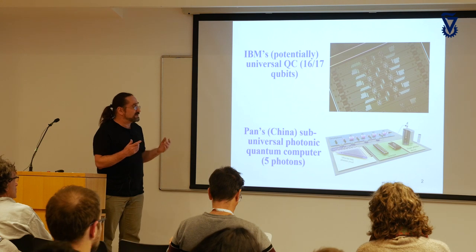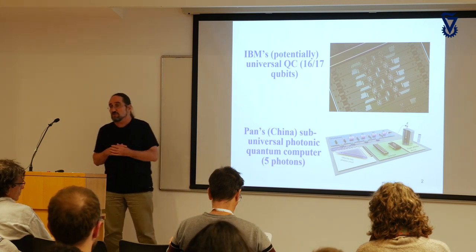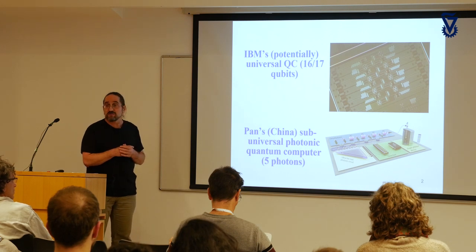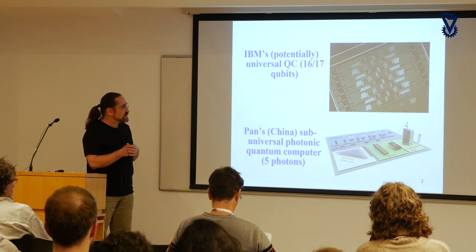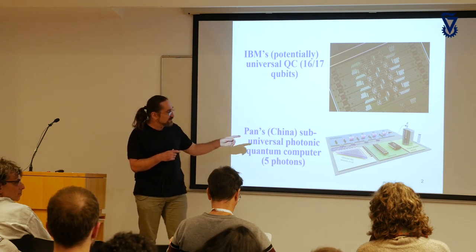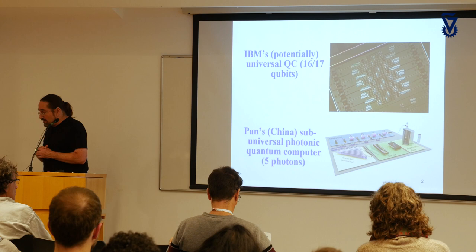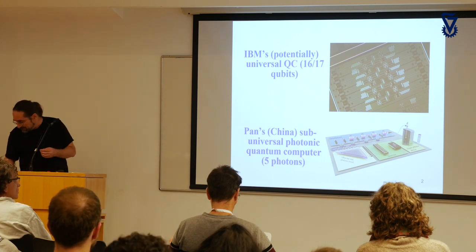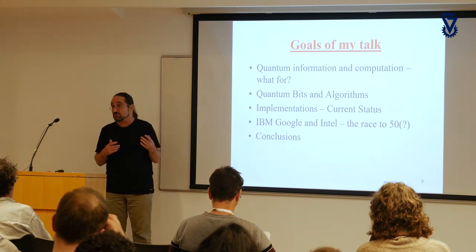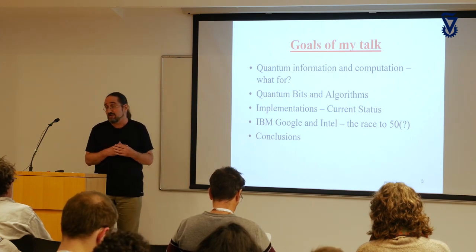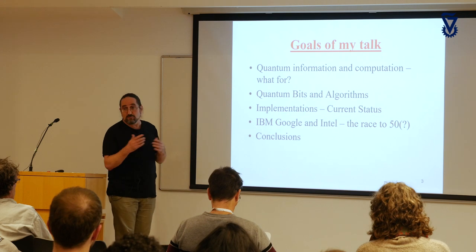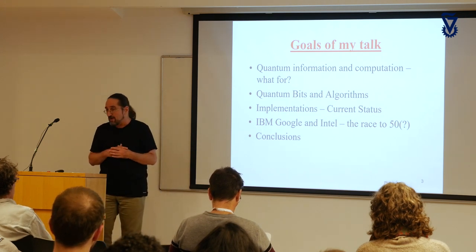On a totally different direction, in China, Pan — who was a postdoc of Anton Zeilinger and is now maybe the best experimentalist in photonics quantum information — ran a sub-universal photonic quantum computer with only five photons, but with ten different possible places, so it is more than just five qubits. There are many other directions: one extremely popular direction is ion trap, another is atoms in cavity, for which Haroche and Wineland got the Nobel Prize.